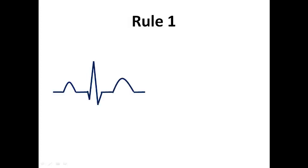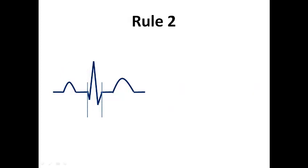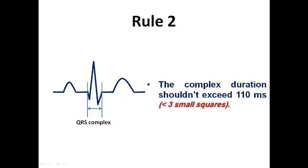Rule number one looks at the PR interval and measures it. It dictates that the PR interval should be from 120 to 200 ms, which is from 3 to 5 small squares. Rule number two checks the QRS complex duration and dictates that the complex duration shouldn't exceed 110 ms, meaning it should be less than 3 small squares.